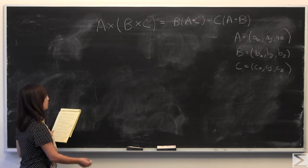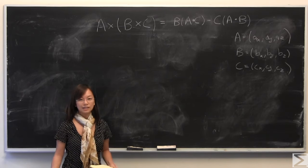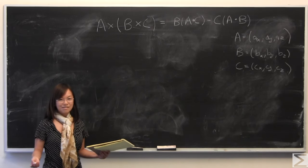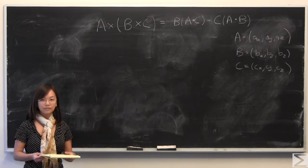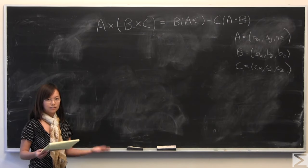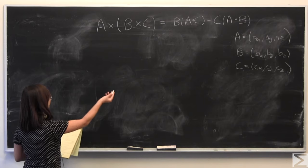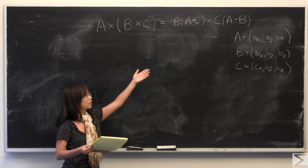Okay, so the problem asks you to prove the vector triple product identity. And this is a really important, pretty big one if you're doing vector calculus, playing with vectors at all. And so in other words it's known as the back minus cab rule for a pretty clear reason.